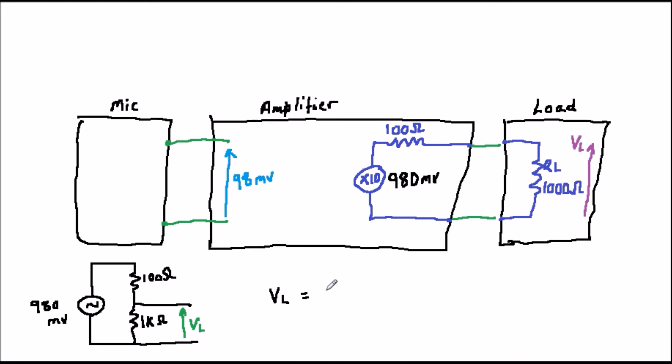Again, the output of the amplifier and the input of the next circuit form a voltage divider and we can redraw the circuit in the diagram. This time, the voltage getting into the next circuit is equal to 0.98 volts times 1000 over 100 plus 1000, which is equal to 0.909 volts or 909 millivolts.